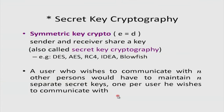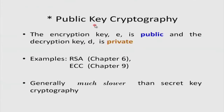In secret key cryptography, for each person you communicate with, you need a separate secret key that only you and that individual share. So you must maintain n such keys — this is a hassle. The answer to this is public key cryptography, where the encryption key E is public. Whoever wants to encrypt a message to send to me must know my public key E, and only I can decrypt it because I have the corresponding private key D, which is mathematically related to E. Examples of public key cryptography are RSA (chapter 6) and ECC (chapter 9).